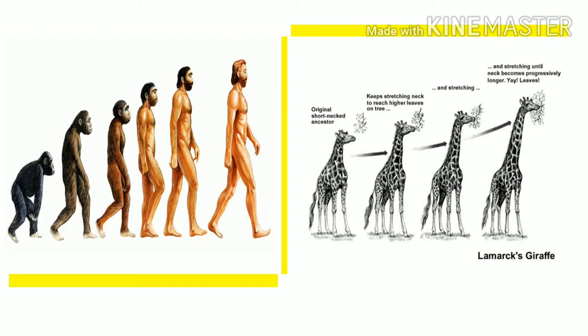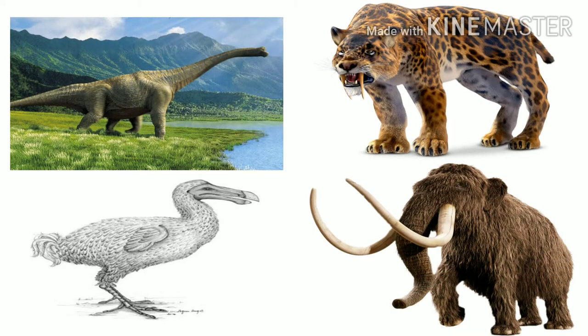From ape, we transformed to Homo sapiens, and so the giraffe gained its height in course of time to survive in this world. Many species went extinct as they could not fit and adjust themselves to their environment — like the Dodo bird, Dinosaur the large lizard, Mammoth the extraordinary large elephant, and Sabretooth lions and tigers.